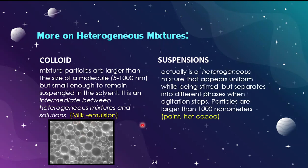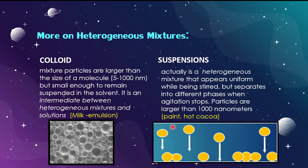Another type of heterogeneous mixture is a suspension, where the particles are bigger than those in a colloid and ultimately settle to the bottom of the container. A simple example is paint — stirring allows it to be evenly distributed, but if you let it sit and try to paint again without stirring, the paint will appear more watery with less pigment. Hot cocoa is another example — the chocolate collects at the bottom of the container, so you frequently have to stir it so the mixture seems more evenly distributed when consumed.